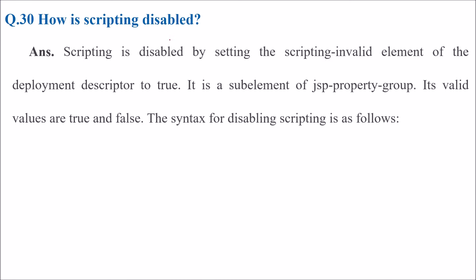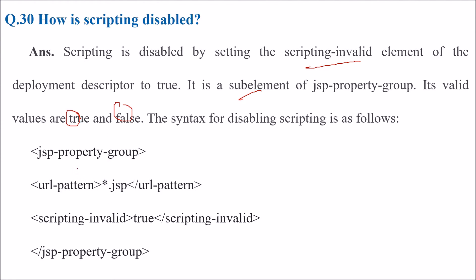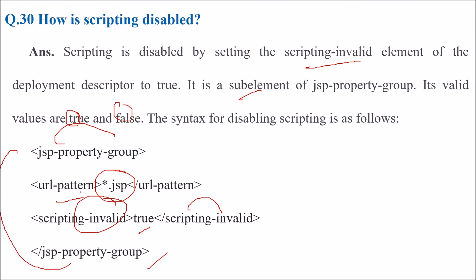How is scripting disabled? Scripting is disabled when we set the scripting-invalid element of the deployment descriptor to true. It is a sub-element of jsp-property-group. Its valid values are true and false. The syntax is: jsp-property-group, then a URL pattern, then scripting-invalid set to true, closed with the jsp-property-group tag.